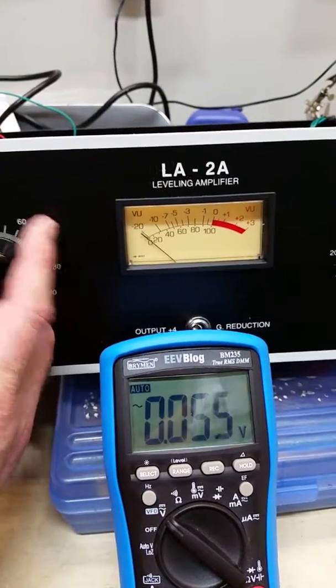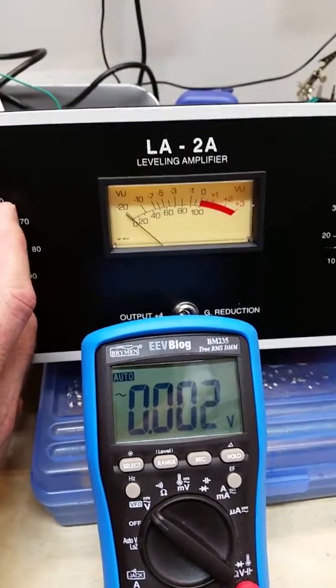And you can see this gain knob is about here. As I turn it down, it goes to zero, right? Or it goes to zero volts on the output. This meter is connected directly across this messy desk to the output XLRs.